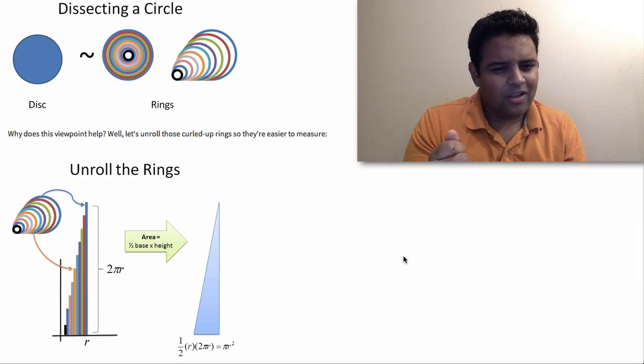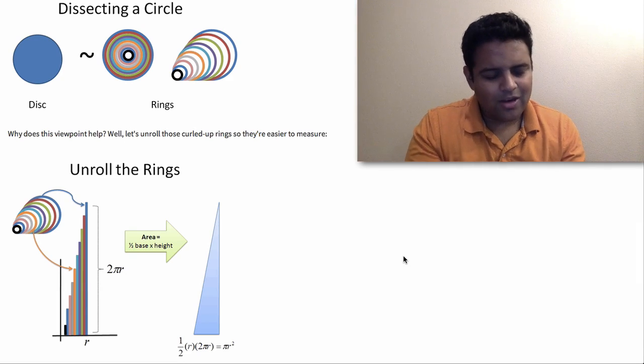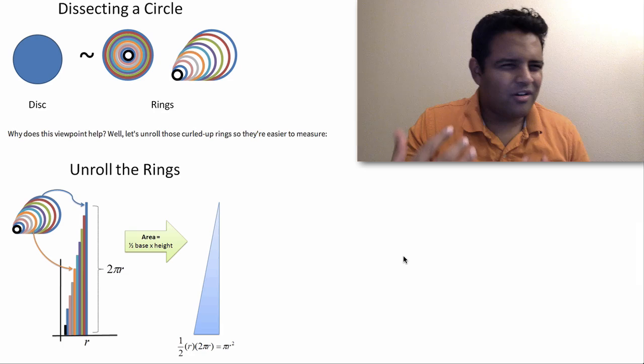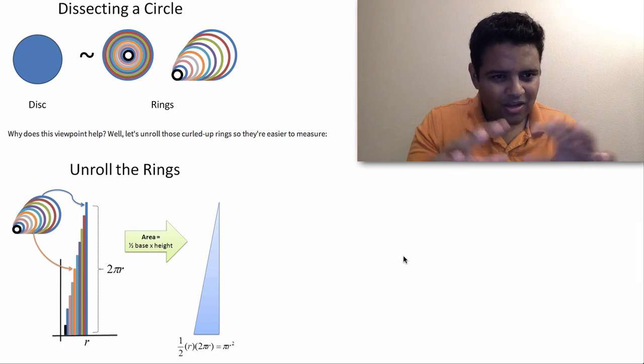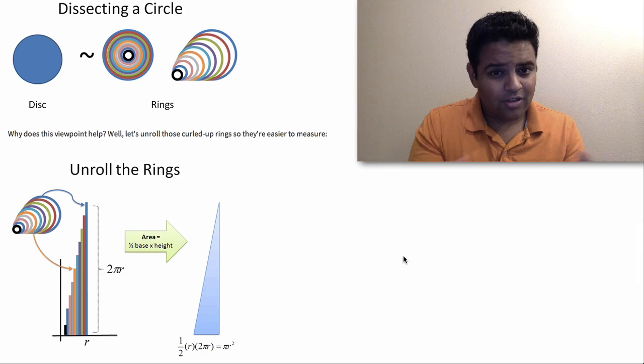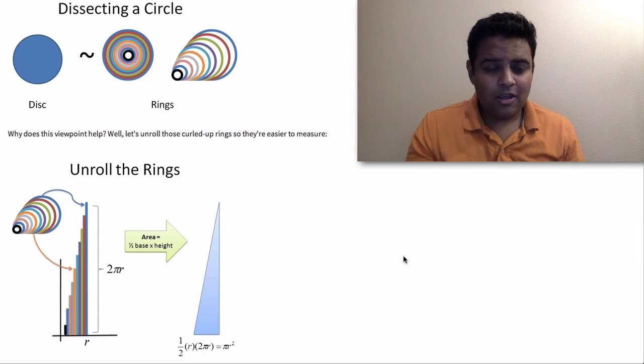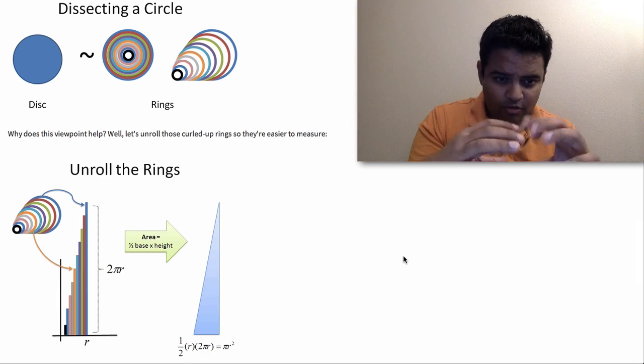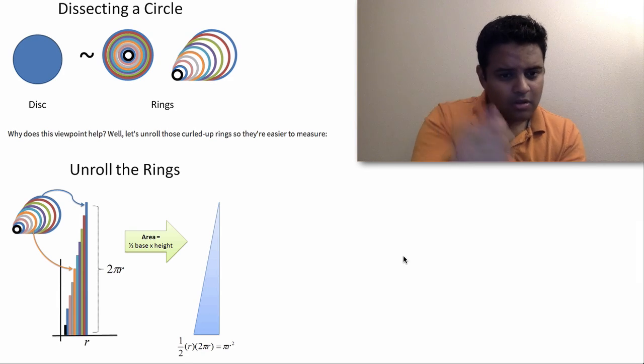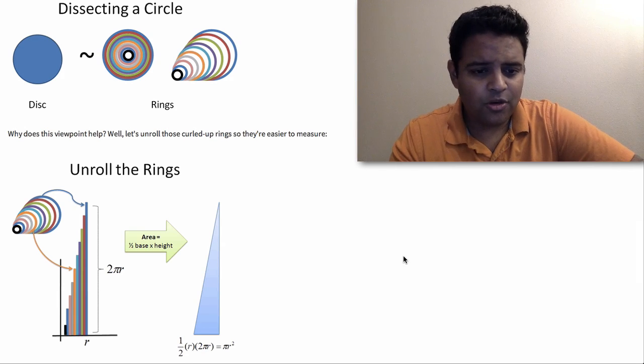Rings are a lot easier to work with than circles. Rings are almost rectangular, right? You take them apart and you unroll them and they kind of make a little rectangle. Circles are really curvy and hard to work with. I mean, you can't really put a ruler on a circle, but if you take a bunch of little rings, imagine little pipe cleaners almost, right? You have those little pipe cleaners that you can bend. I imagine taking those, making kind of a circle and then unrolling them and lining them up.